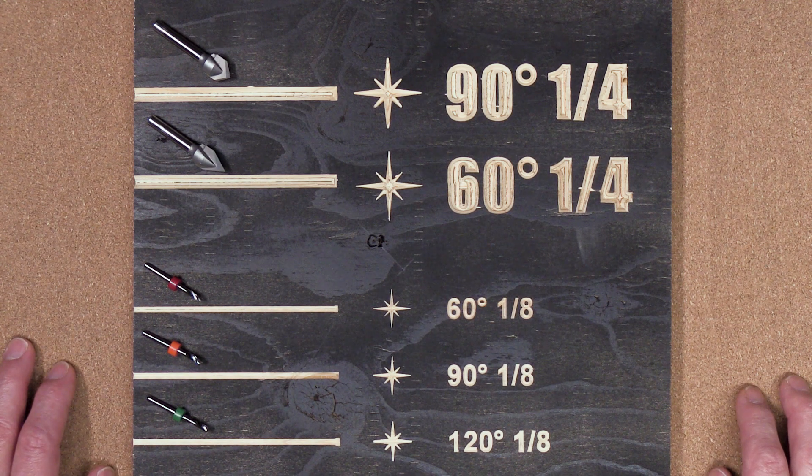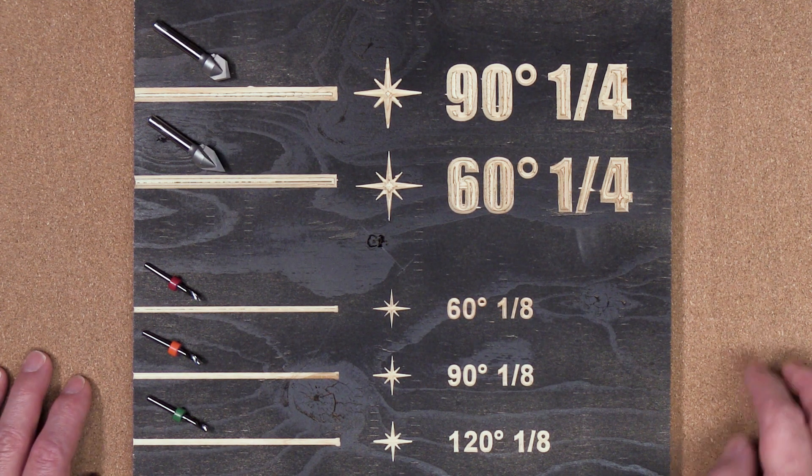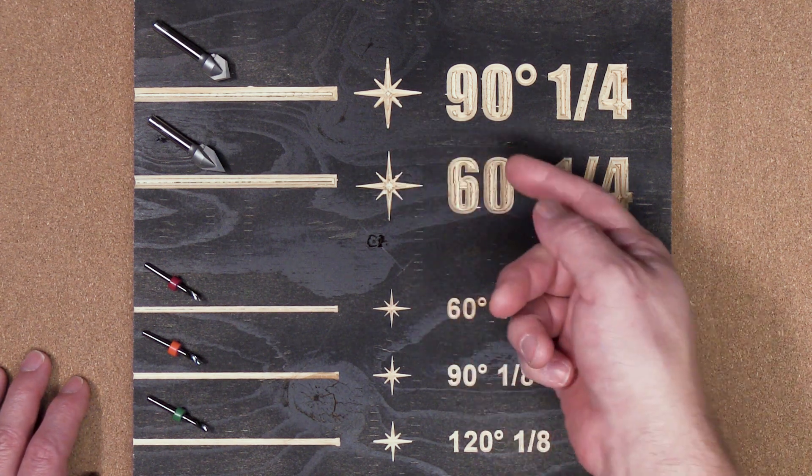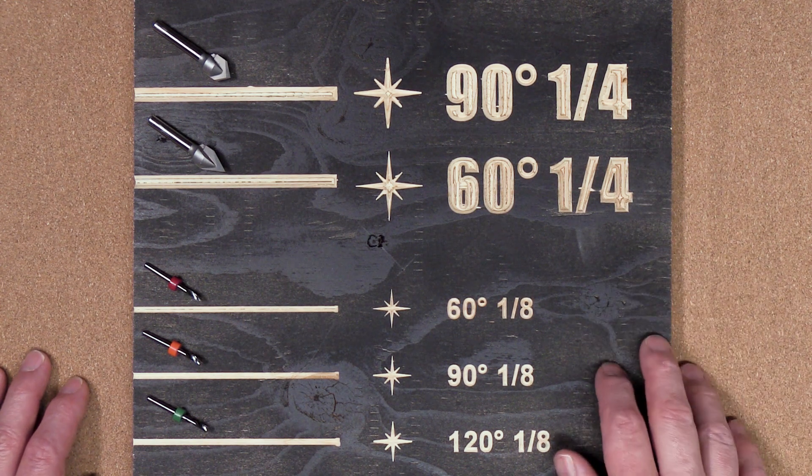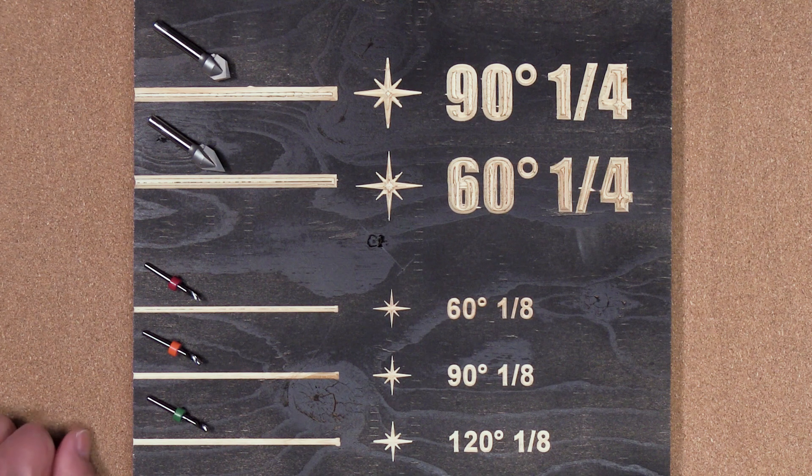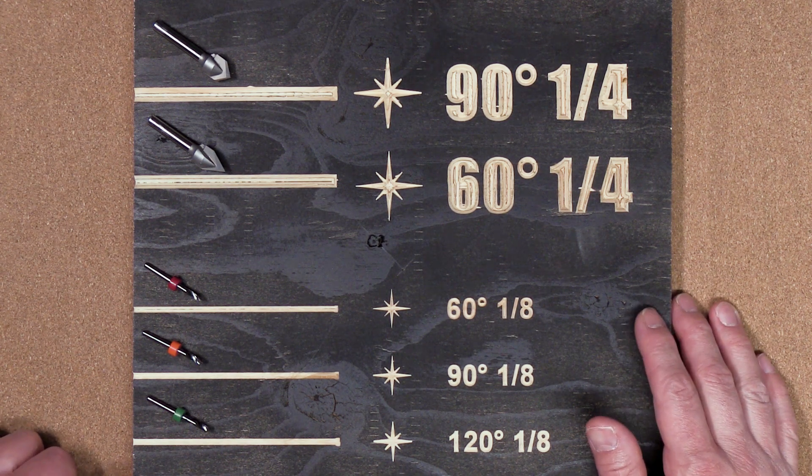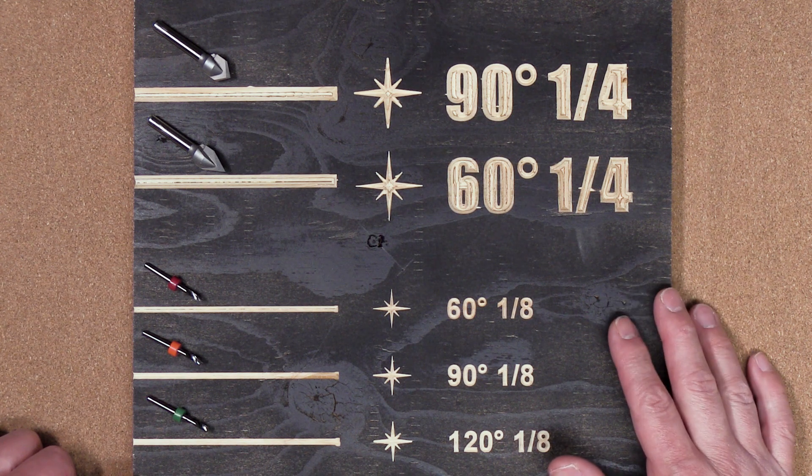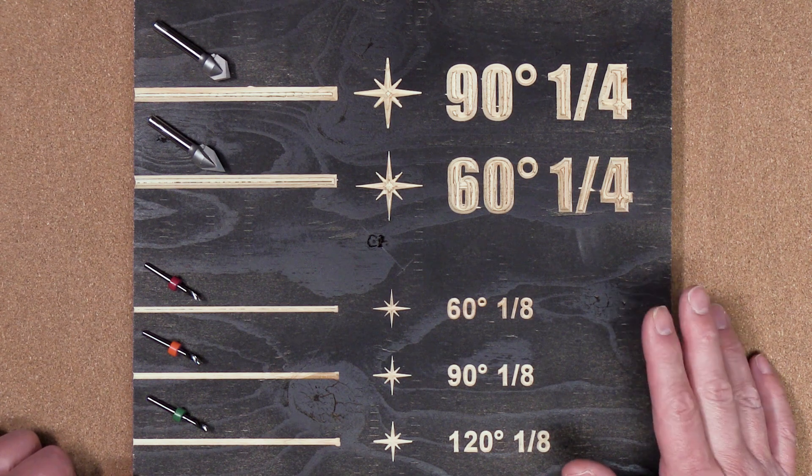There's a few different applications to V-bits, but typically you're going to want to use them when you want to get a carving effect or 3D effect on your material. The effect that these bits give is sometimes called 2.5D. This is referring to the V-bit process not being a true 3D process. This 2.5D V-bit process lets you achieve some of the looks of 3D CNC without the time or effort of actually having to do 3D CNC.